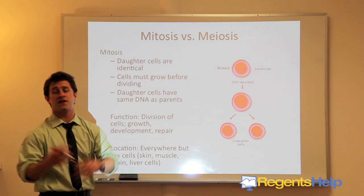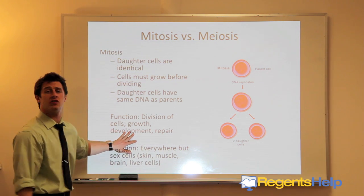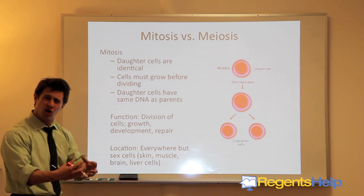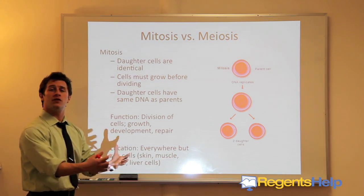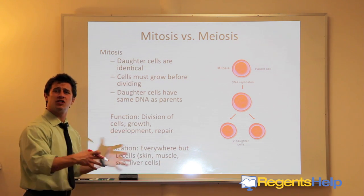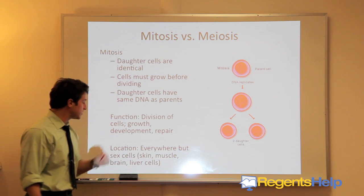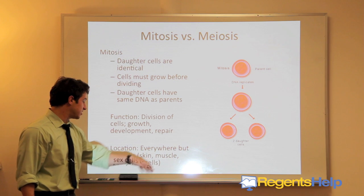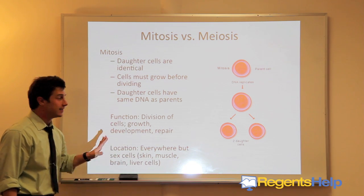When you have a cut on your skin, the cut doesn't stay there forever — the cells around that cut will divide and fill in that space. Also during development, when the embryo develops into a fetus into a full functioning human that can be released from the mother's uterus, a lot of mitosis will go on during those developmental months. Mitosis occurs everywhere but sex cells — everywhere but the sperm and the egg: skin cells, muscle cells, brain cells, liver cells.